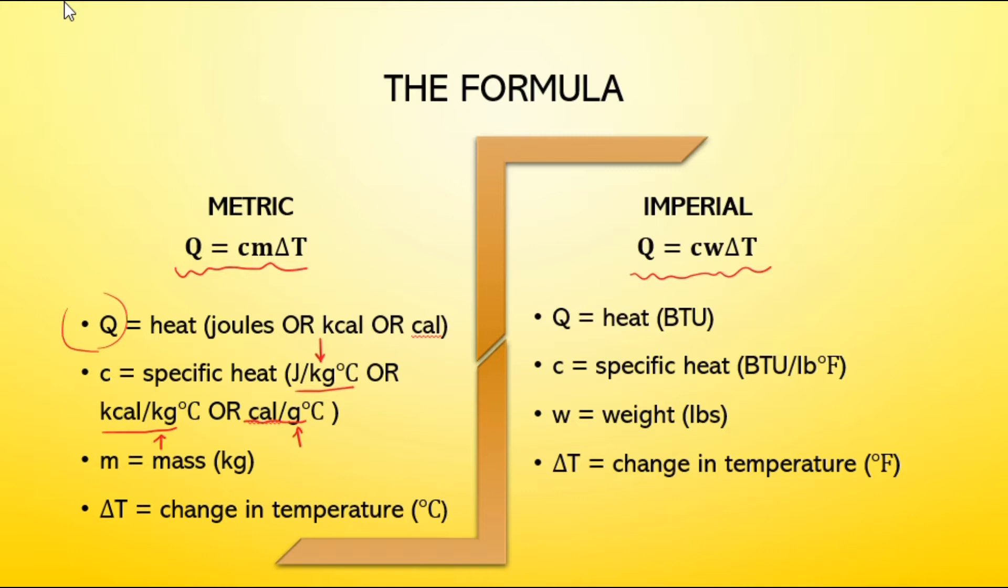Watch out for any conversion you may have to do. If you want to find the heat transfer in imperial, in BTUs, you're going to use pounds. And delta T is our change in temperature, equals T2 minus T1.